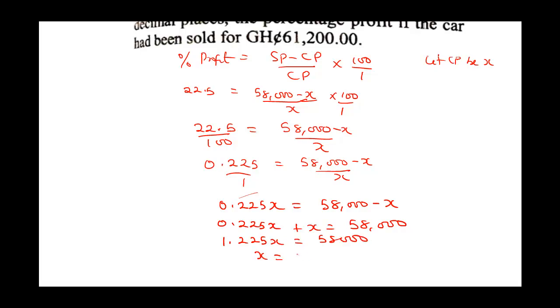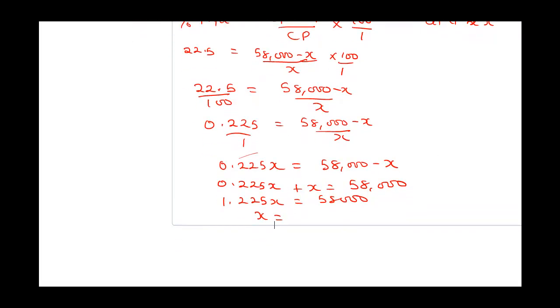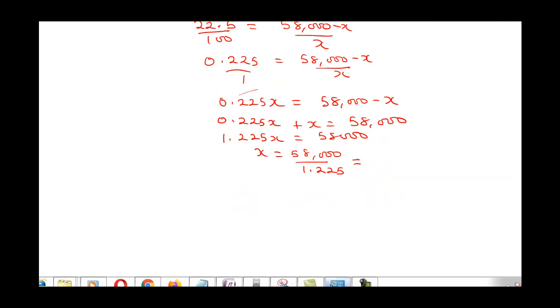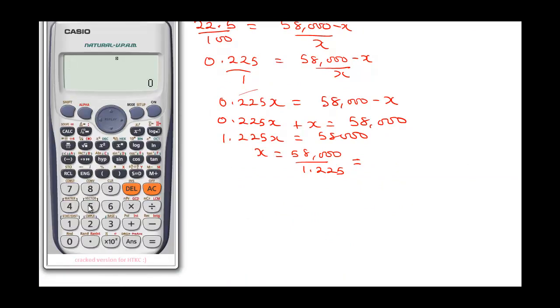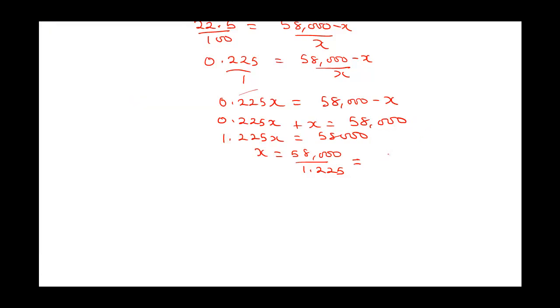At this point, to find our X, our X is going to be 58,000 divided by 1.225. Punching this on our calculator, 58,000 divided by 1.225, this is going to give us 47,346.938. This is approximately 47,346.94 to 2 decimal points.